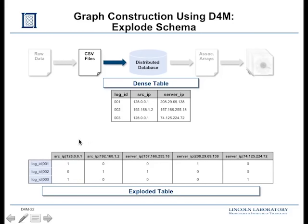Triple stores store all the data as triples: a row, a column, and a value associated with everything. So we take our dense data and create what we call an exploded table — we have the log ID, append the column name, and append its value to it. In SQL, if you're an old SQL person, this schema will immediately give you hives because you're creating an enormous number of columns. But triple stores only store non-blank entries, so they're perfectly happy with as many columns as you want — a billion rows, 10 billion columns, completely fine.